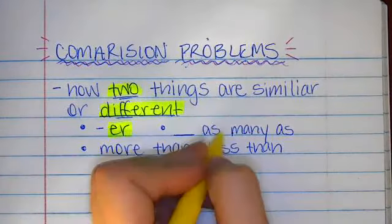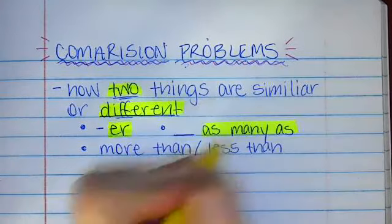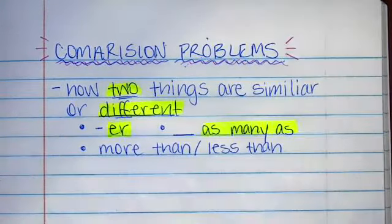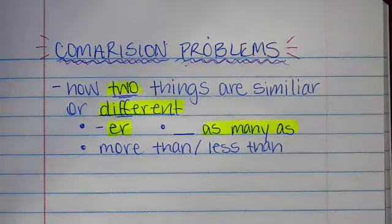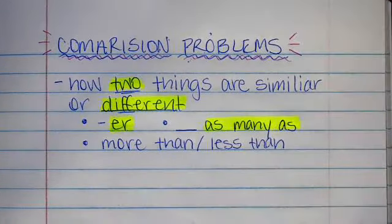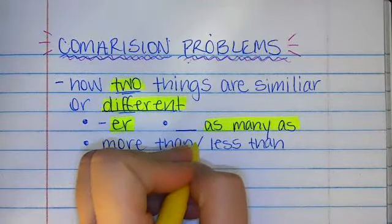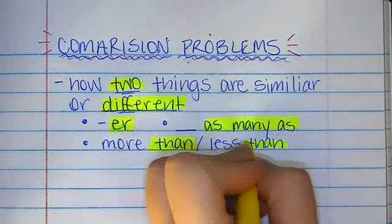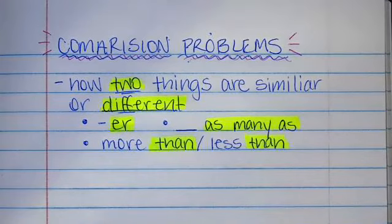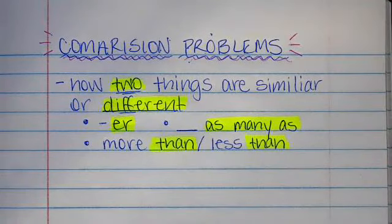Or you will have a number or a situation and they'll say something is as many as another thing. And then another key to comparison situations is when you see the word than, when they say more than, less than, taller than, shorter than. These are all key words that clue you in that we're doing a comparison.